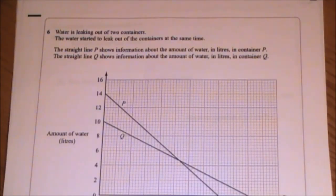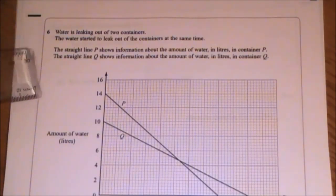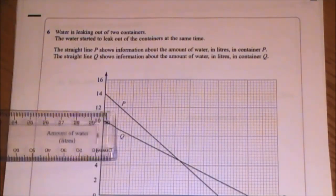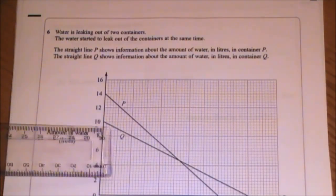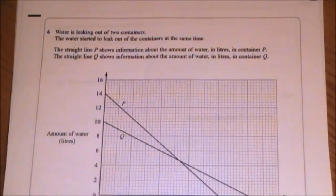Question 6 is a gradient of the line question. Water is leaking out of two containers. The water started to leak out at the same time. The straight line shows information about the amount of water in container P and the straight line Q shows information about the amount of water that leaks in container Q.